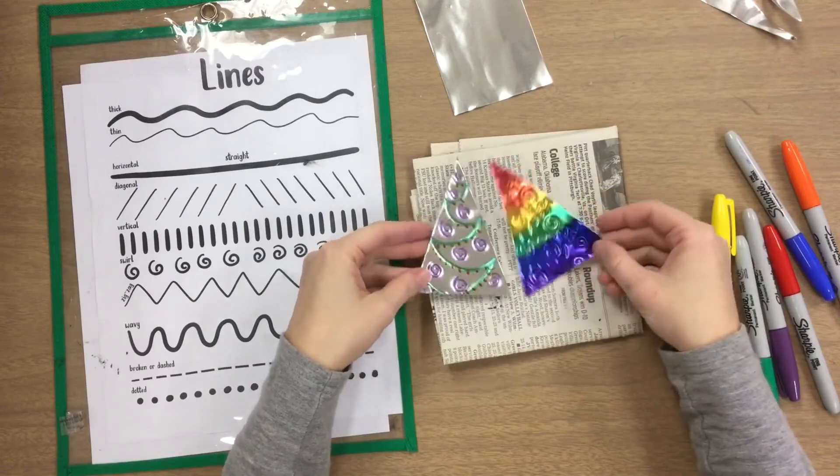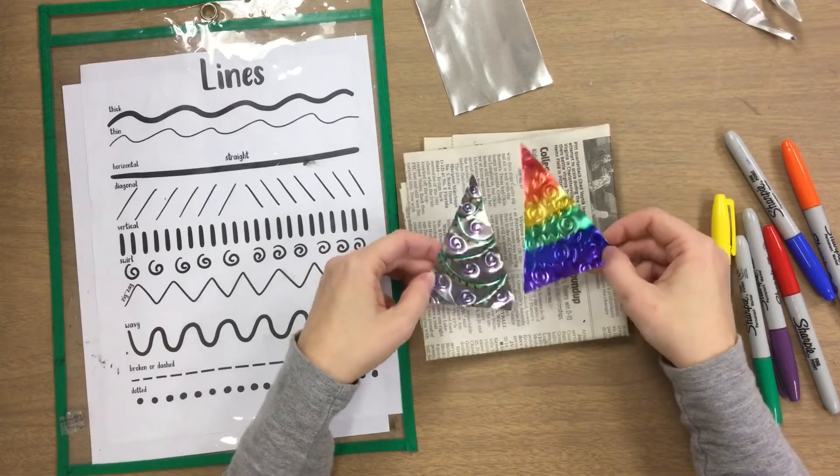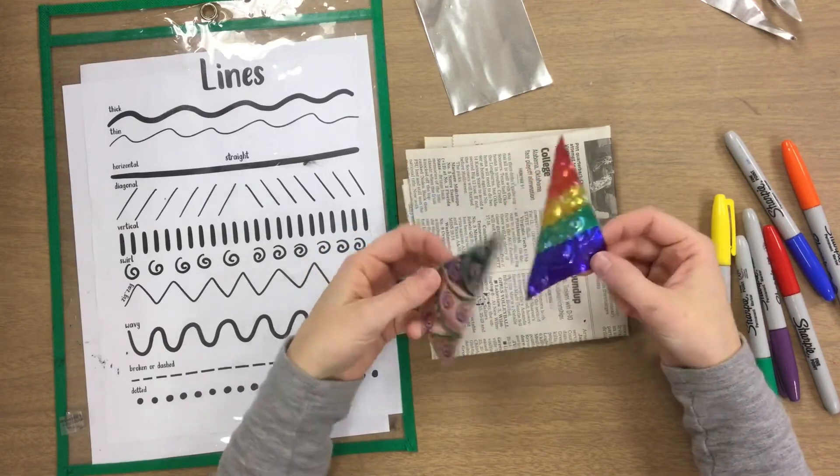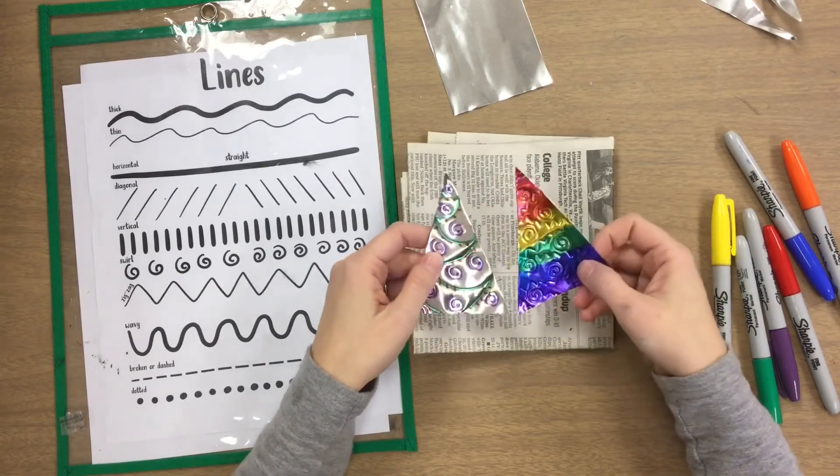You can see how different these can be. We're all starting with this triangle shape but then you can decorate your ornament however you like. Then we will get these hole punched and get the yarn through so that they can go on the tree.